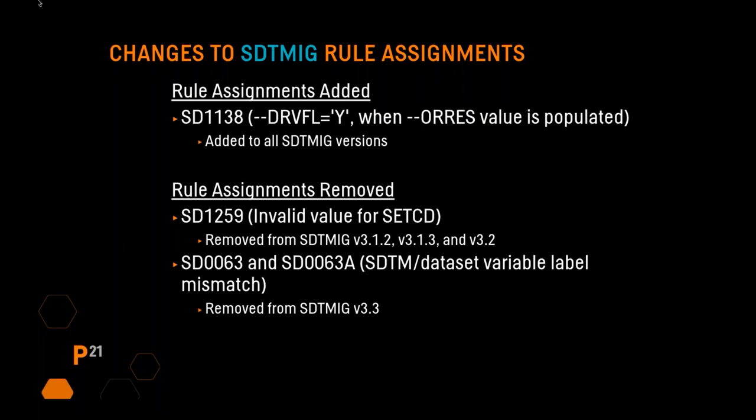SD0063 and SD0063A, checking for variable labels, were removed in SDTM IG 3.3. The reason is that with the publication of SDTM IG 3.3, matching the variable labels is no longer part of conformance.